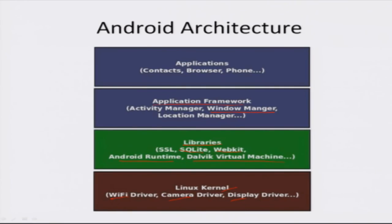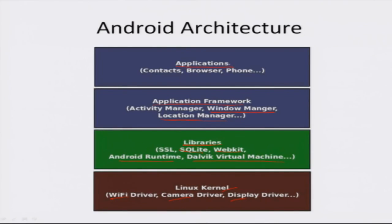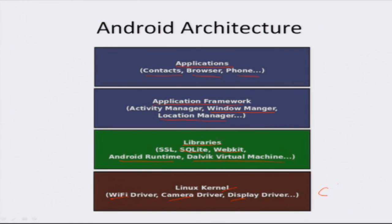The application framework consists of the Activity Manager, which handles the lifecycle of activities like opening and closing them; the Window Manager, responsible for transitions between windows, animations, and display management; and the Location Manager, which provides location-related services and updates. On top of the framework we have applications like contacts, browser, phone, and many more. From a programming language perspective, the bottom layer is written in C, libraries in C and C++, and the application framework and applications are written in Java.